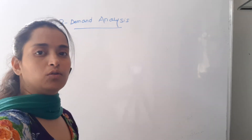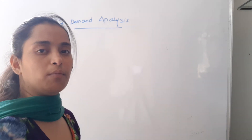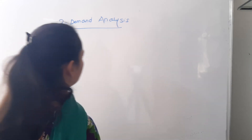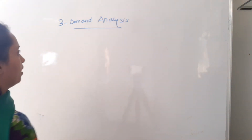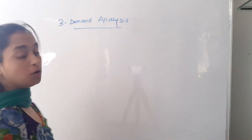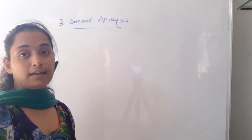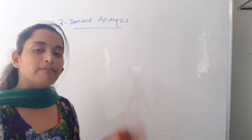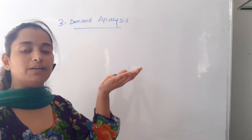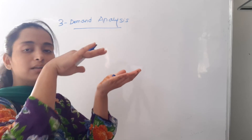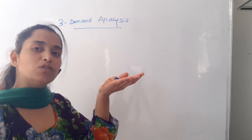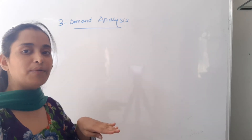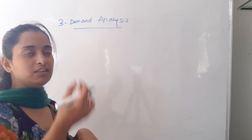Good morning kids. Today we'll talk about the demand schedule and exceptions to the demand. As I told you in the previous lecture, the law of demand states that whenever there is an increase in prices, simultaneously the demand for the same good goes down. And when there is a decrease in prices, then demand will increase.